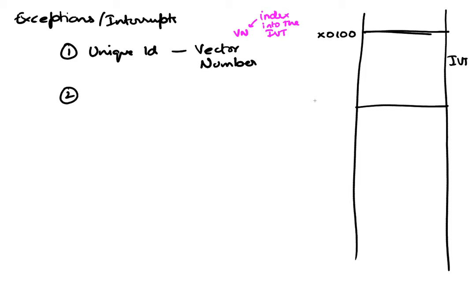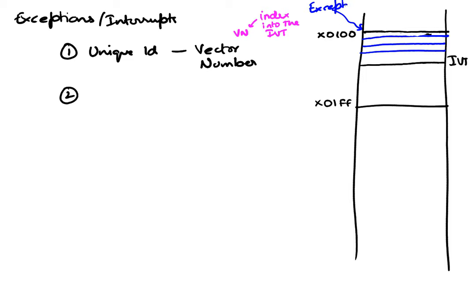The interrupt vector table on LC3 starts at x0100 and goes all the way up to x01FF. The first three of these entries are the exceptions. The idea of the interrupt vector table is that half of these are exceptions and half are interrupts. Interrupts start at x0180.